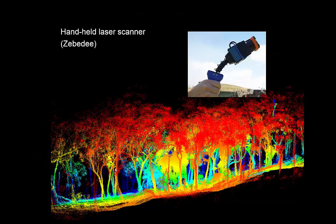Here's another example: a handheld instrument called the Zebedee, also developed by CSIRO more recently. Because you can walk around with it, you can cover a larger area. It was originally developed for environments where you don't have a GPS signal, such as inside buildings or caves. Rather than GPS referencing, it compares all the data points it collects and constructs a three-dimensional model of the environment on its own. Here you can see a piece of forest at Black Mountain — red indicates the nearest trees, blue the furthest — providing data useful for wood volume, carbon estimation, or characterizing vegetation strata.